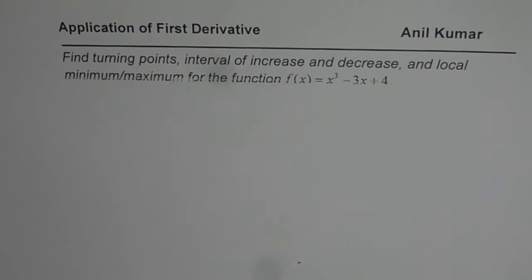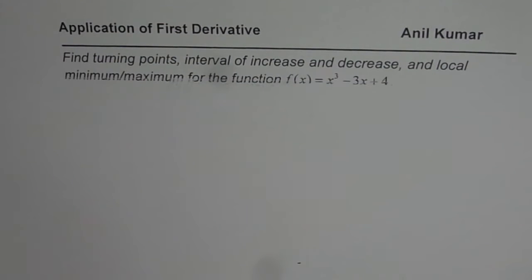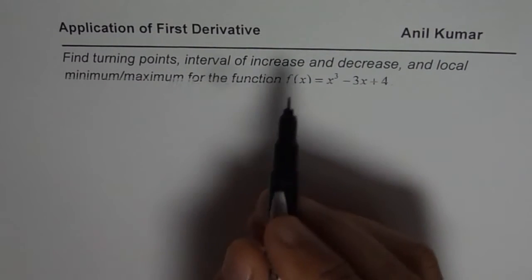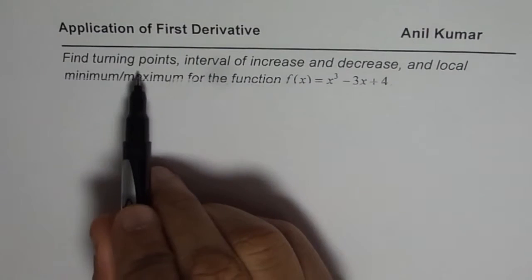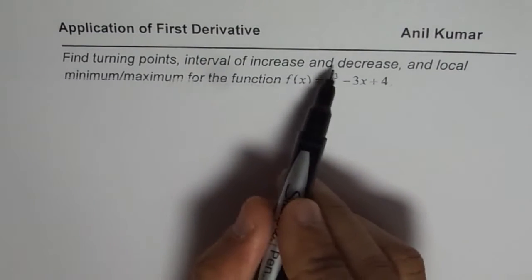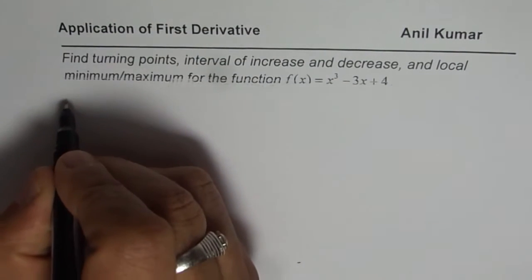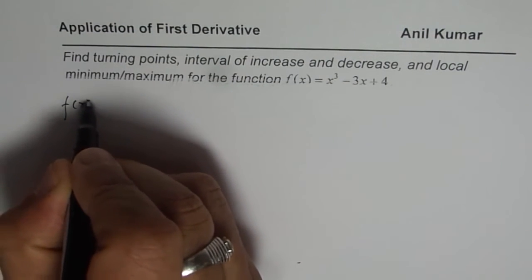I am Anil Kumar and this video is on application of first derivatives. The question is: find turning points, interval of increase and decrease, and local minimum and maximum for the function f(x) = x³ - 3x + 4. From the first derivative you can find all these three things, and in this particular video we will learn how.